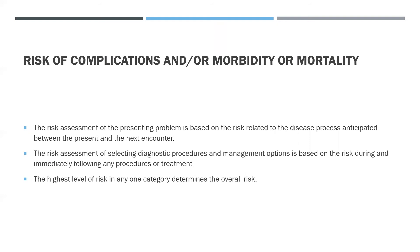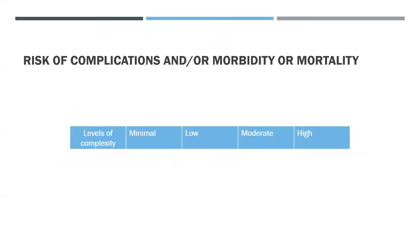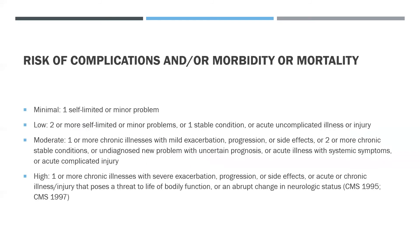Risk of complications and/or morbidity or mortality considers the nature of the presenting problem, the urgency of the visit, any comorbid conditions, and the need for surgery. Unlike the other elements, a point system is not used here. According to the 1995 and 1997 DGs, the level is determined by the nature of the presenting problem, diagnostic procedures ordered, and management options selected. There are four levels: minimal (one self-limited or minor problem) and low (two or more self-limited problems, or one stable chronic condition, or acute uncomplicated illness or injury).